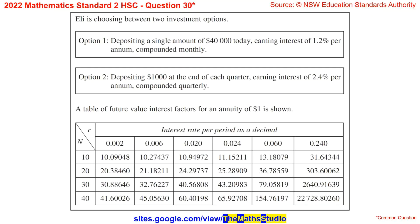Question 30. Eli is choosing between two investment options. Option 1: depositing a single amount of $40,000 today, earning interest of 1.2% per annum, compounded monthly. Option 2: depositing $1,000 at the end of each quarter, earning interest of 2.4% per annum, compounded quarterly. A table of future value interest factors for an annuity of $1 is shown.